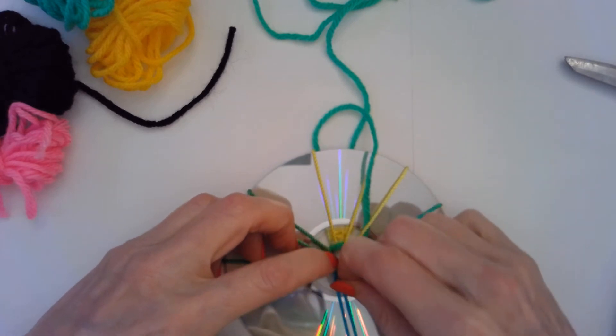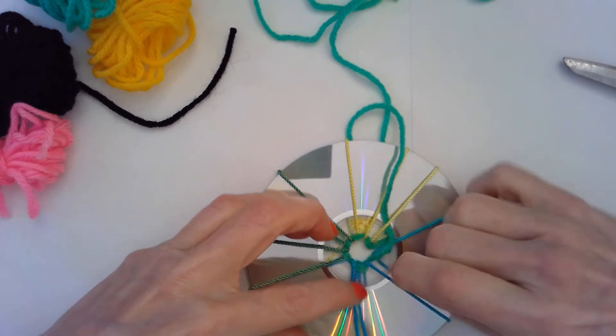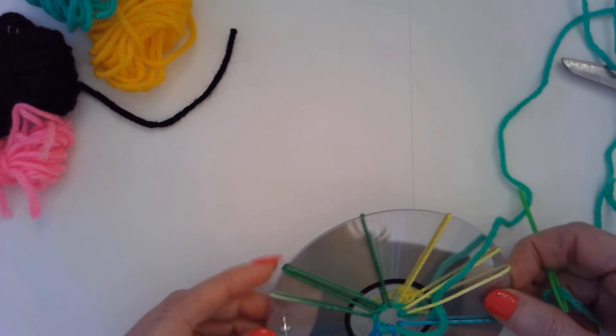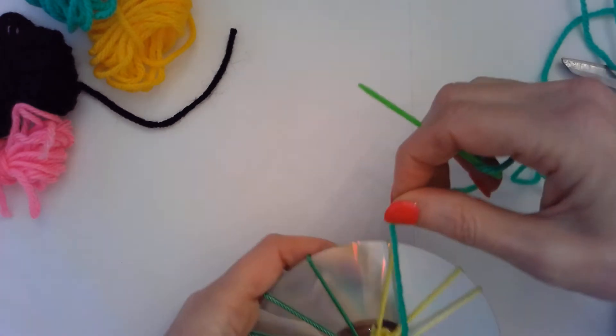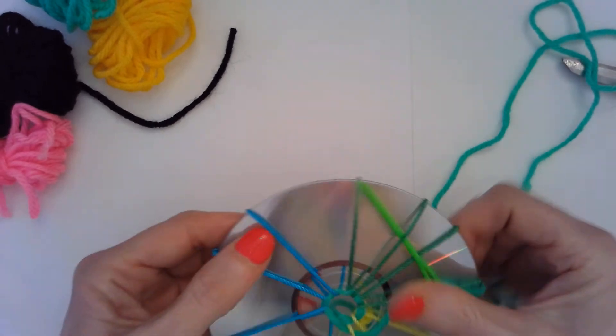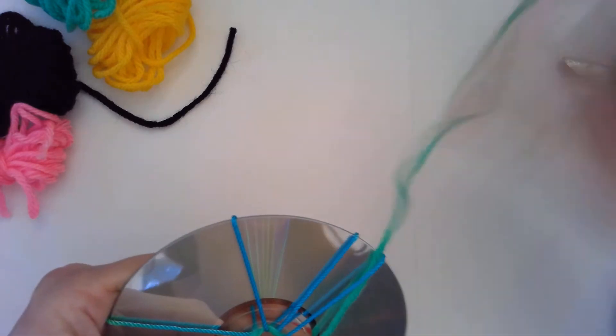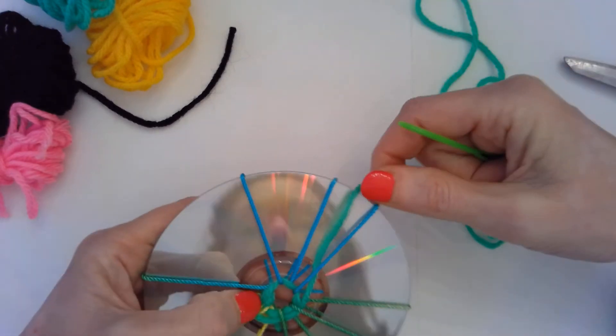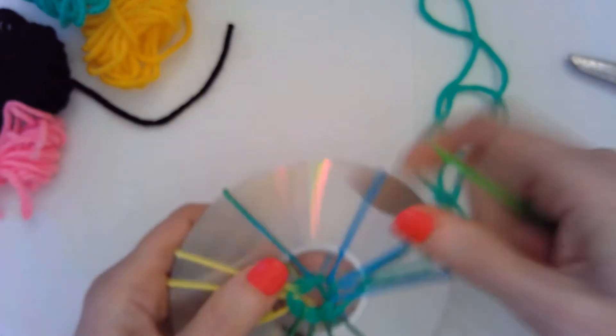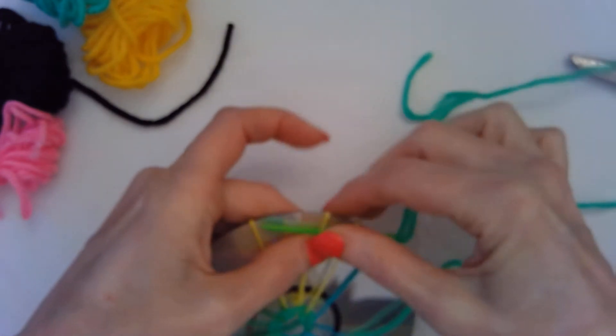And you want to adjust that first layer so that it's around the edge. The first time around is the hardest, I think it's a little easier as you keep going. So follow that pattern, over under over under, adjusting as you're going and pulling kind of gently. You don't want to pull too hard but you don't want it to be too loose either.